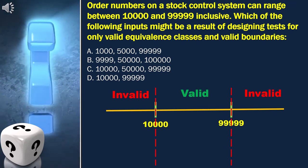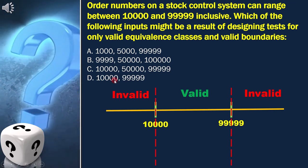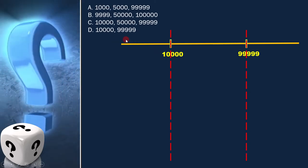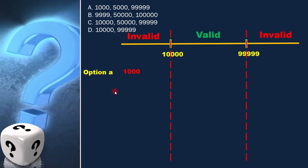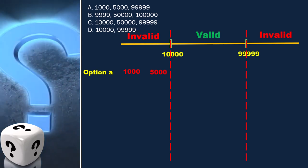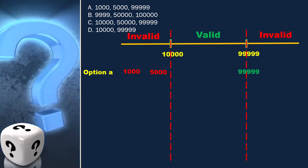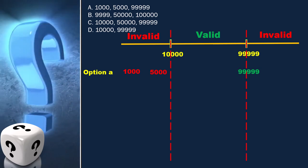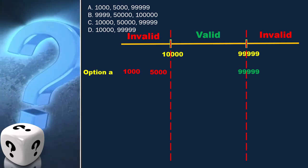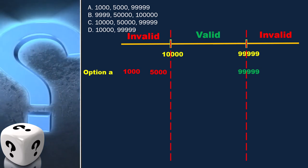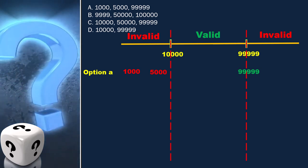Now we have to analyze each of these options to get the correct answer. Option A is 1000, 5000, and 99,999. Here two values are in invalid range and one value is in valid range. This is not the correct answer.